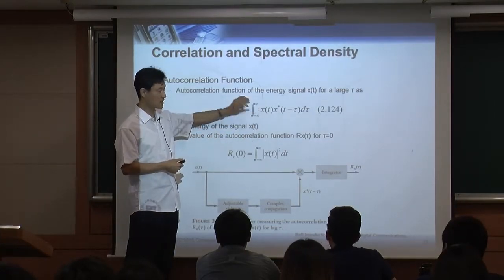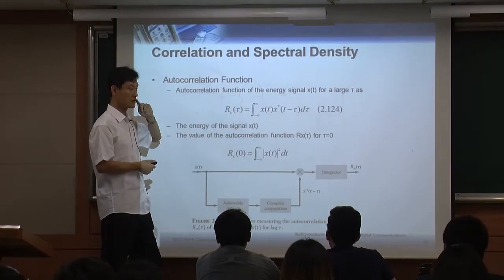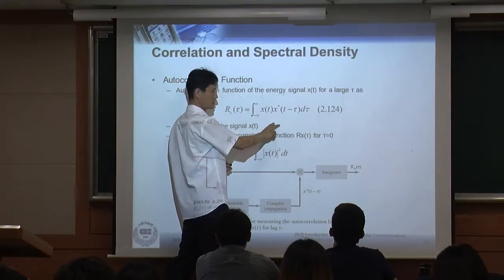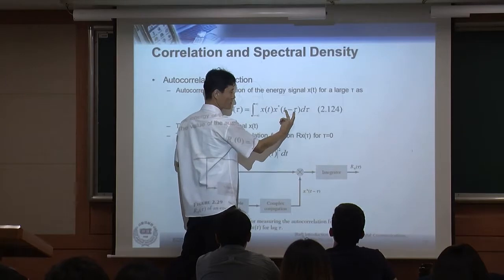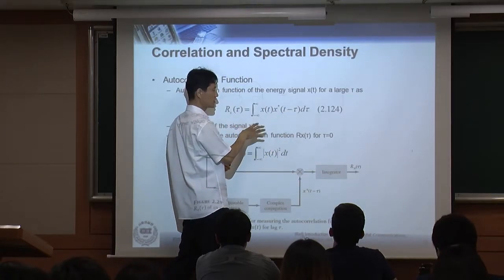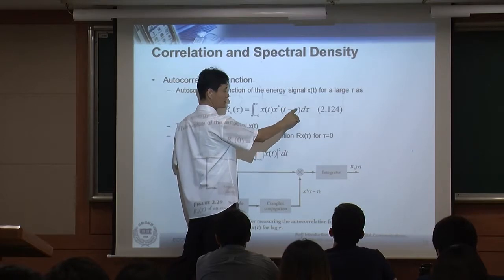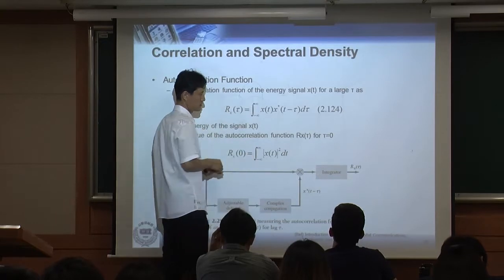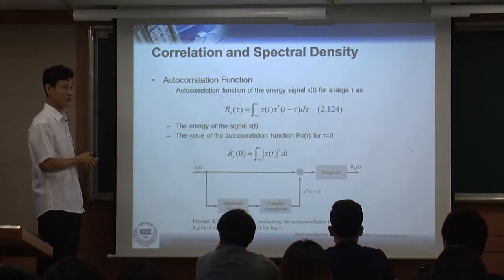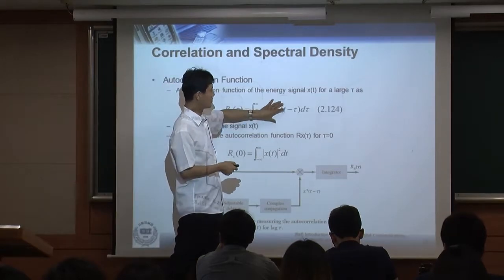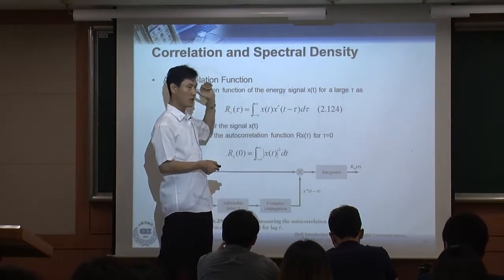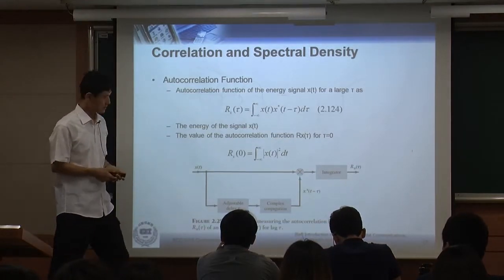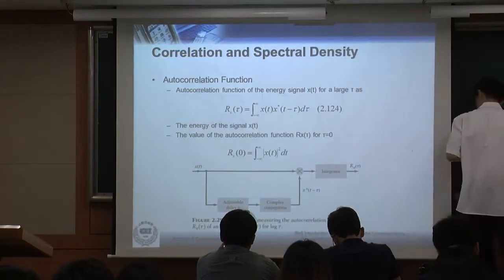The difference between autocorrelation and convolution: there is a complex conjugate, and the main difference is that the argument is flipped. In convolution the original definition has τ minus t; in autocorrelation it's t plus τ — so this is flipped compared to convolution. That is the only essential difference.